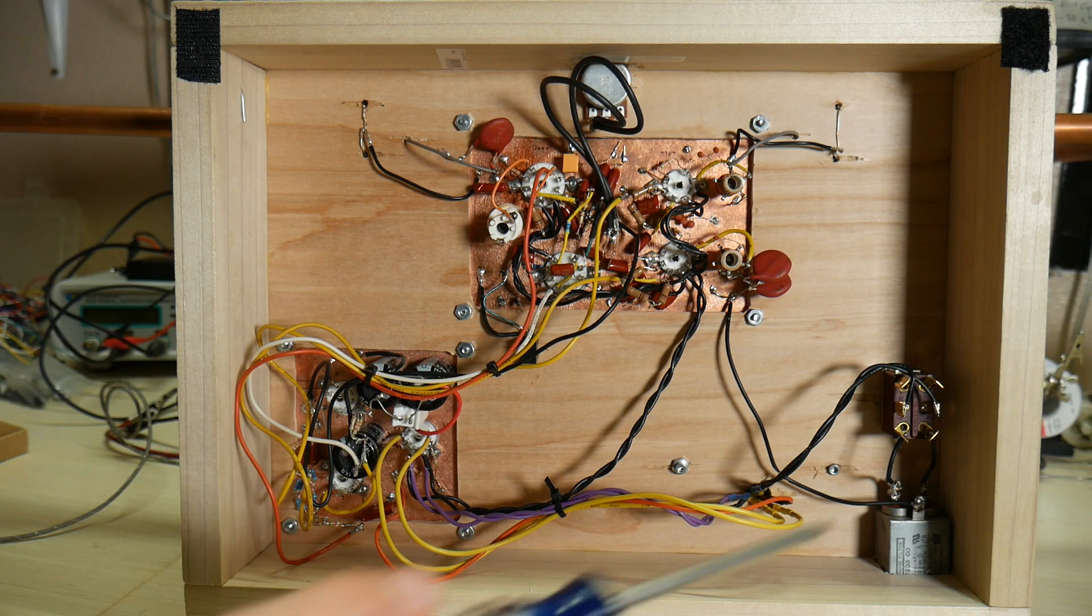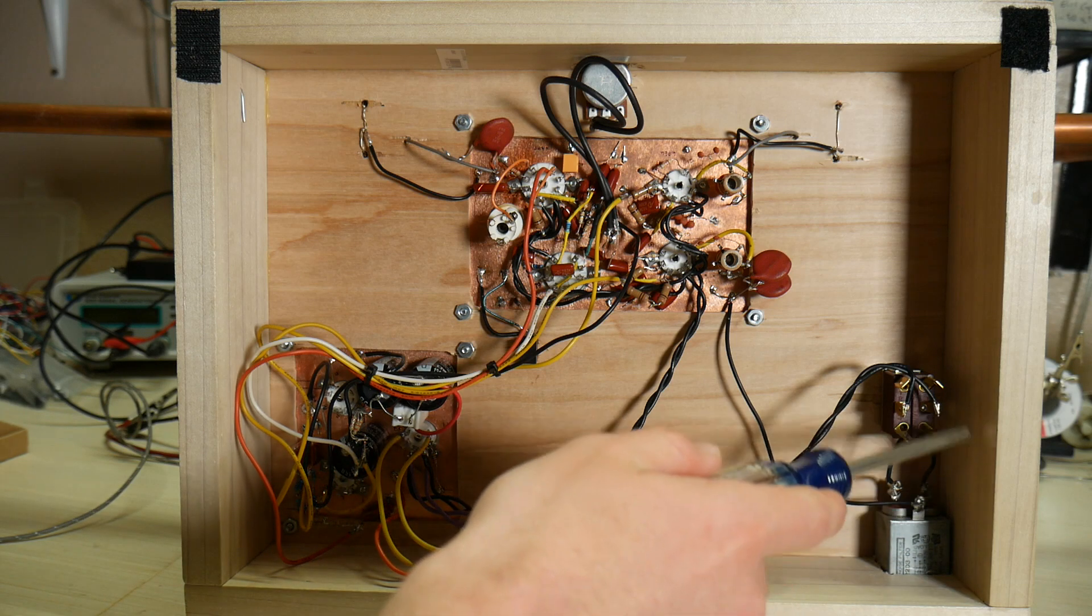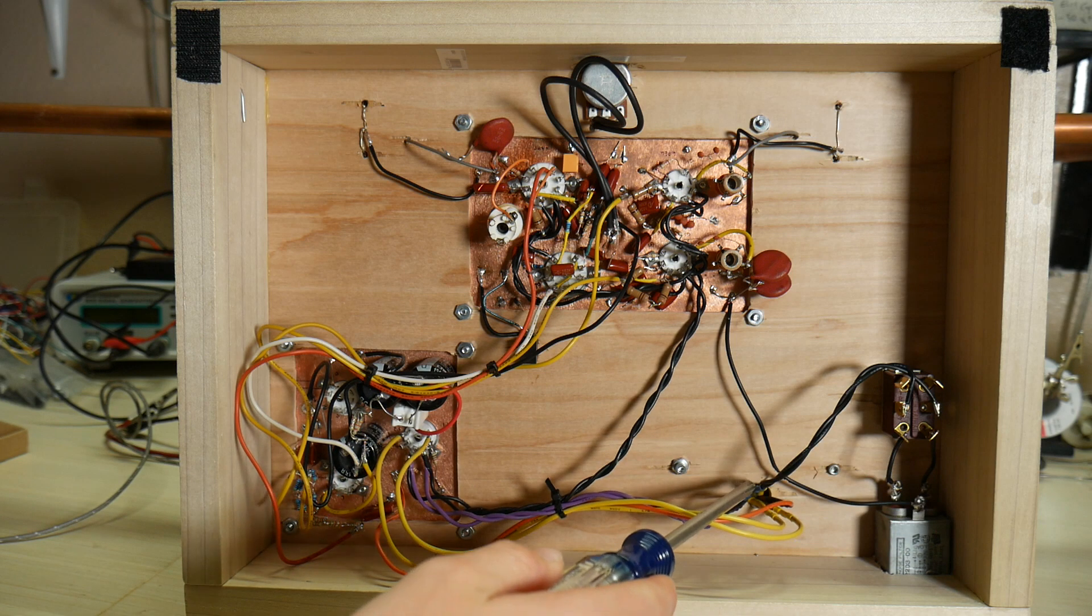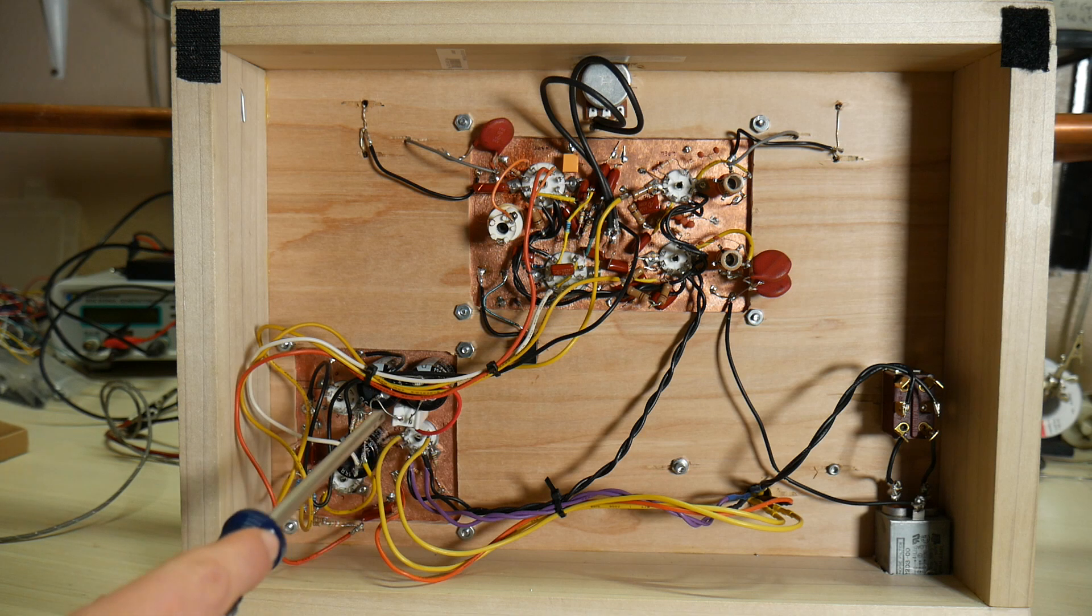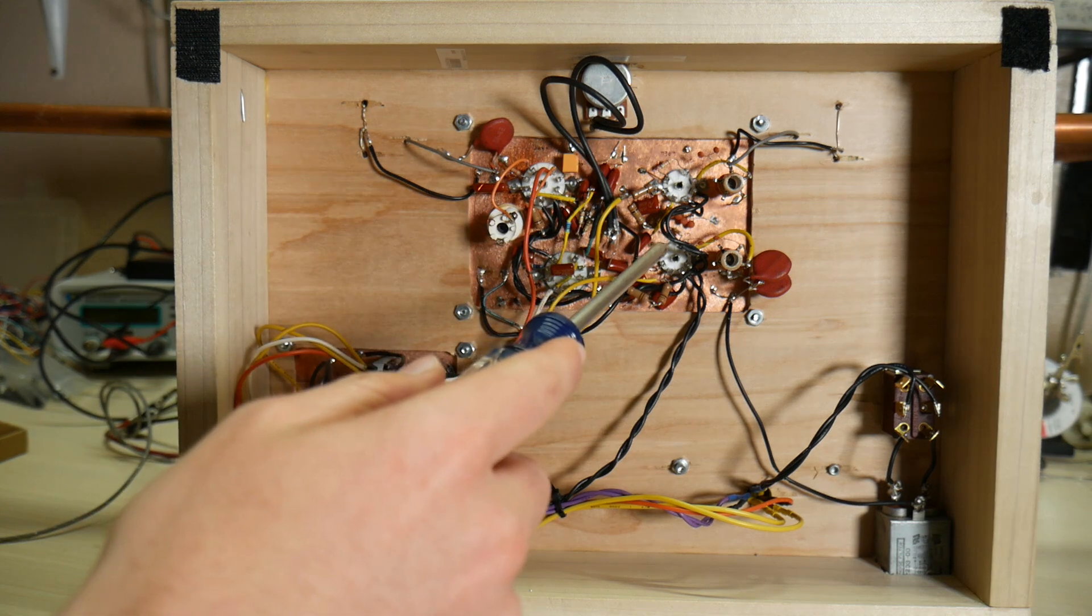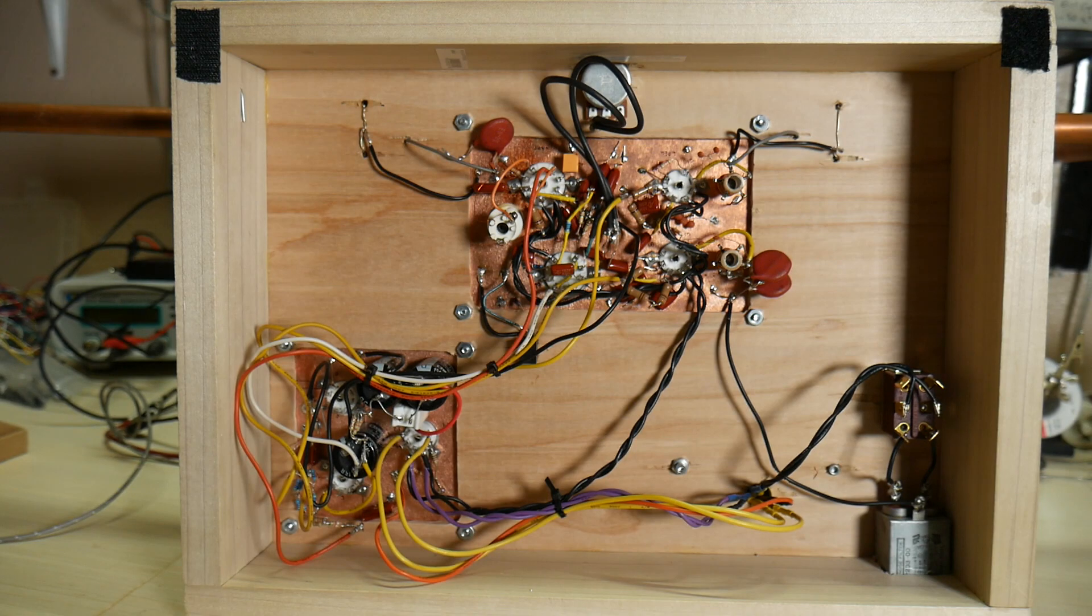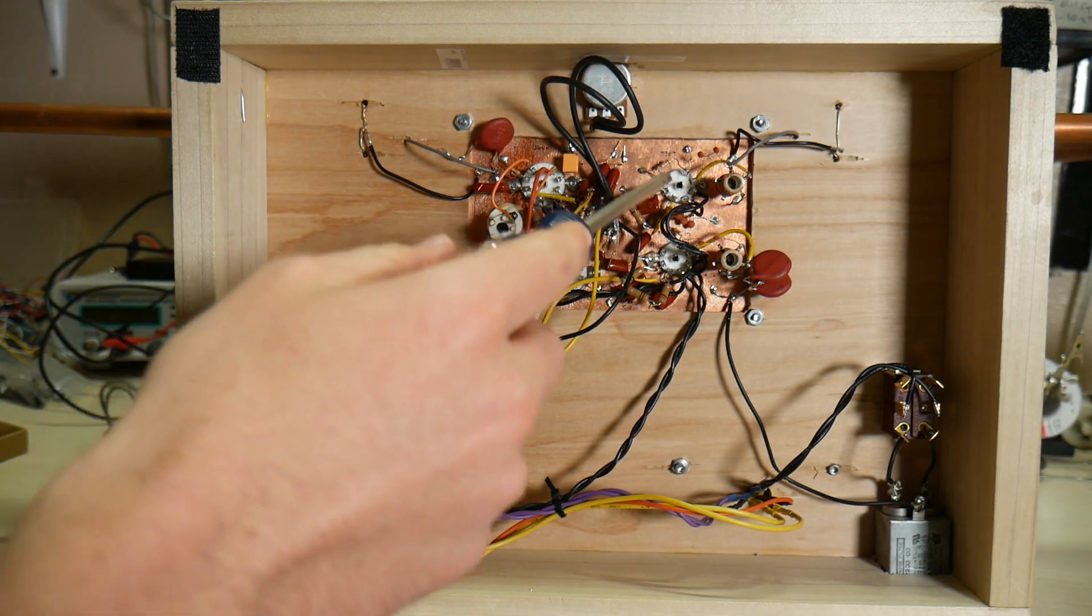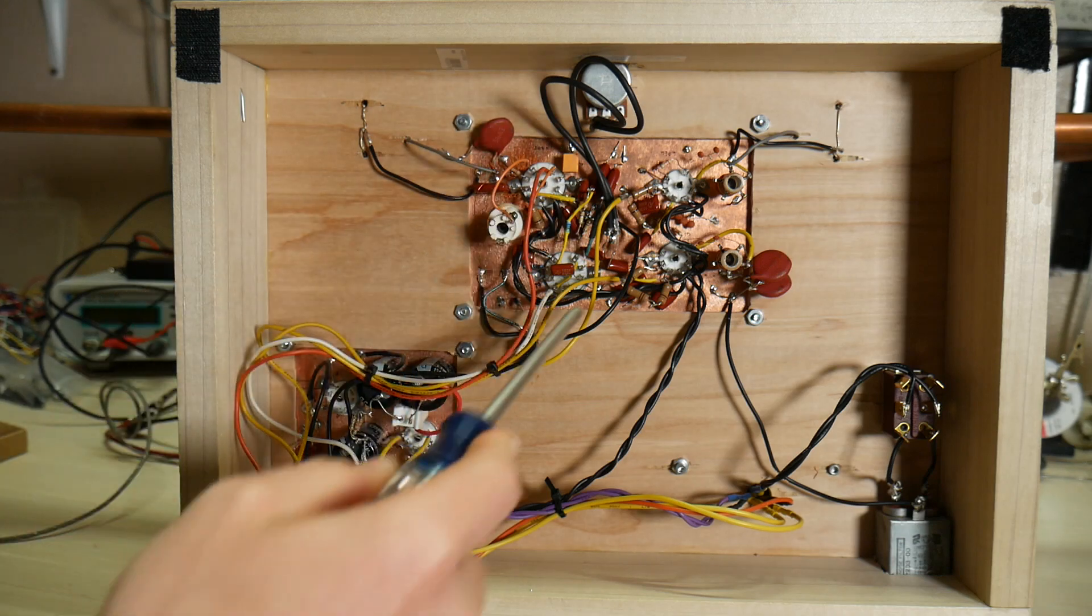This is the underside of the theremin. Here, we have the line filter. Filters the electricity coming in. That goes through a power switch, then into the mains transformer. That then goes into the power supply board. That power supply board creates 300 volts of filtered DC current. It sends it to various points of the actual heart of the circuit. This is the board that has the pitch oscillator on this side, the volume oscillator here, and the mixer here.